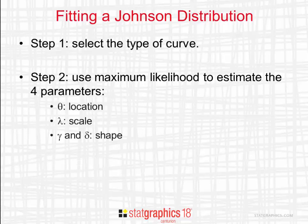Fitting a Johnson distribution to a set of data requires two steps. The first step is selecting the type of curve: unbounded, bounded, or log-normal. The second step is to use maximum likelihood to estimate the four parameters of the Johnson distribution: a location parameter, a scale parameter, and two shape parameters.